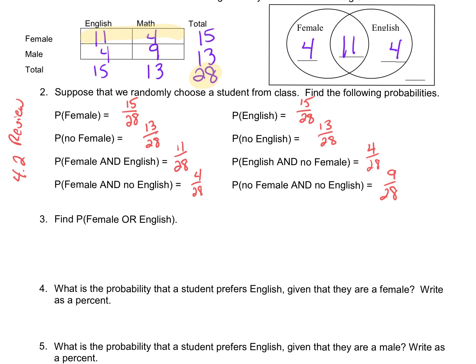This next one's a little tricky because we've got to take care of the double counts. For number three, when we look at the probability of female or English, this equals the probability of female plus the probability of English — but we've got to take out that shared region, that 11. So what we have to subtract is the probability of female and English — that 11.